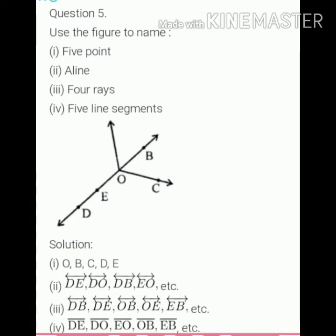In this you have to put one side point and one side arrow. And fourth part is five line segments. It means both sides with fixed points. So, DE, DO, EO, OB, EB, etc.